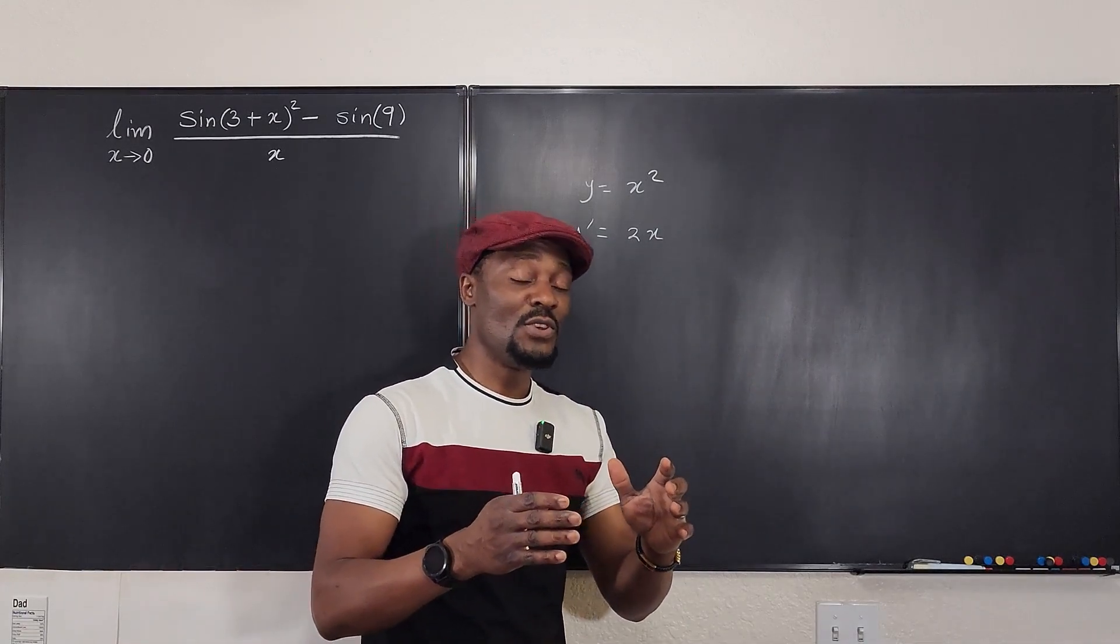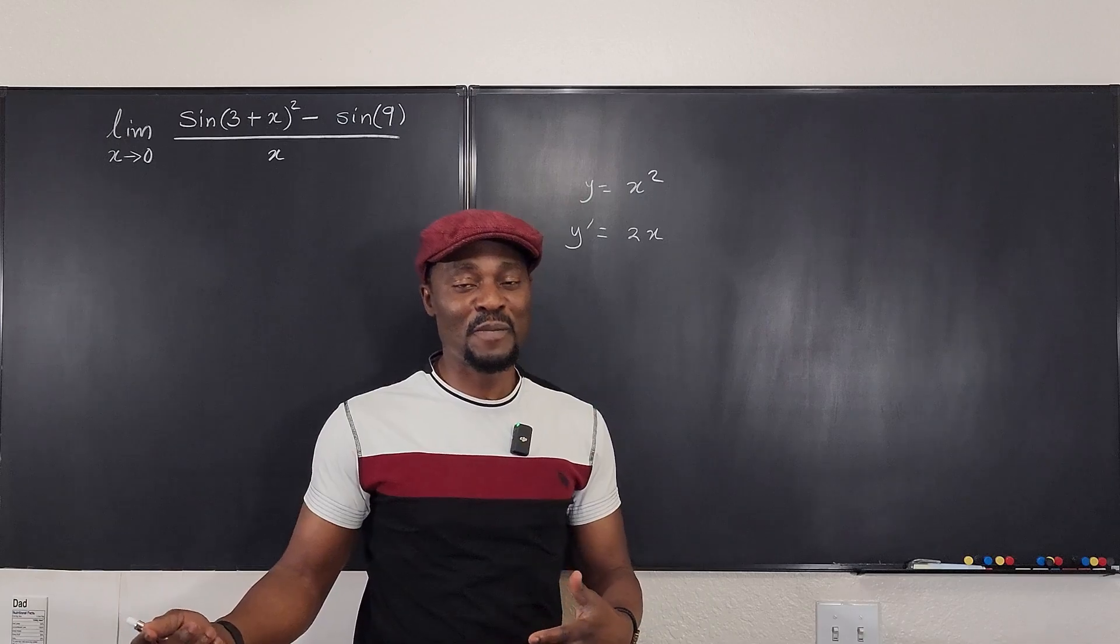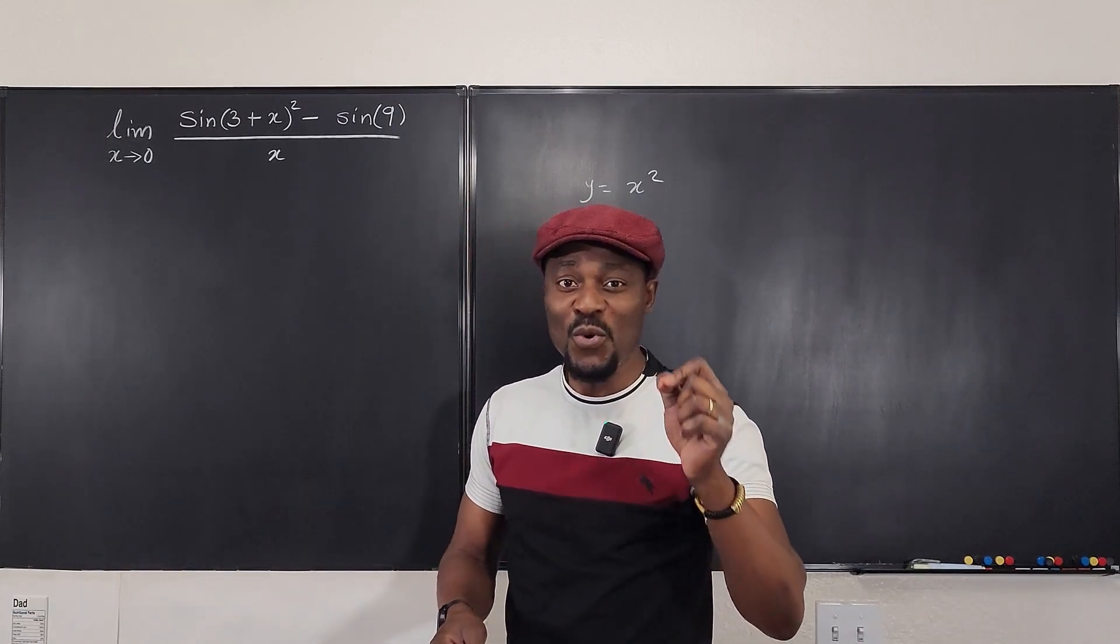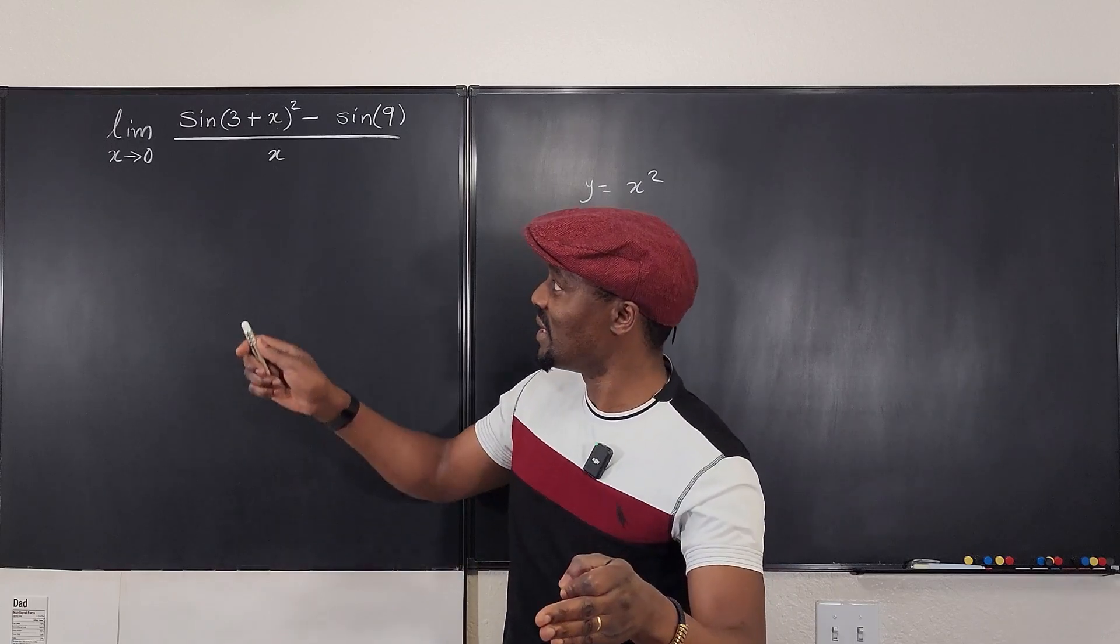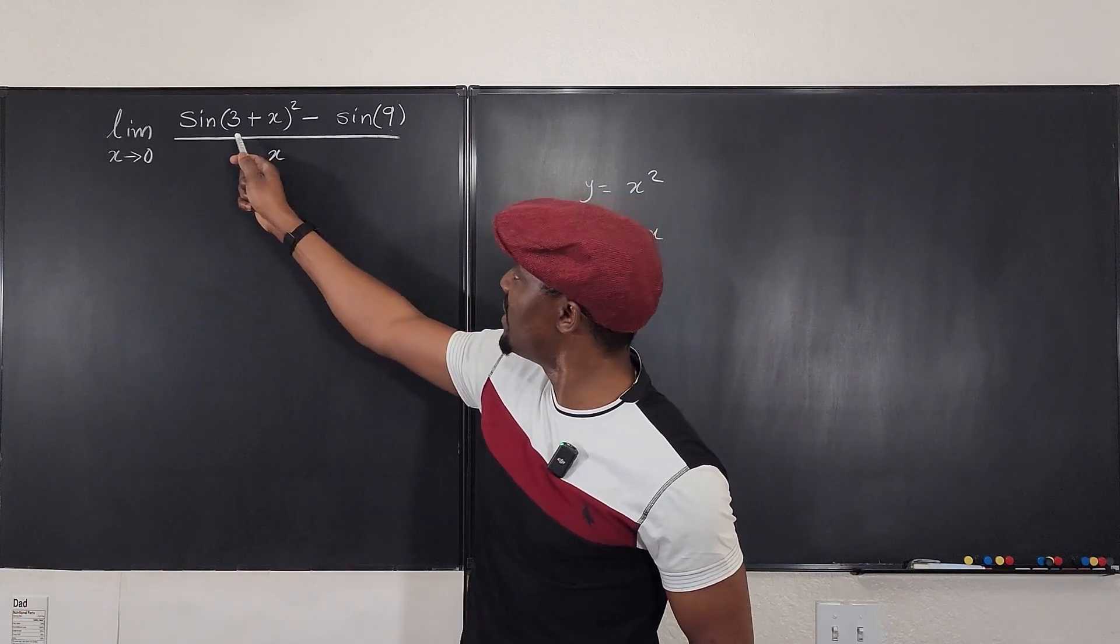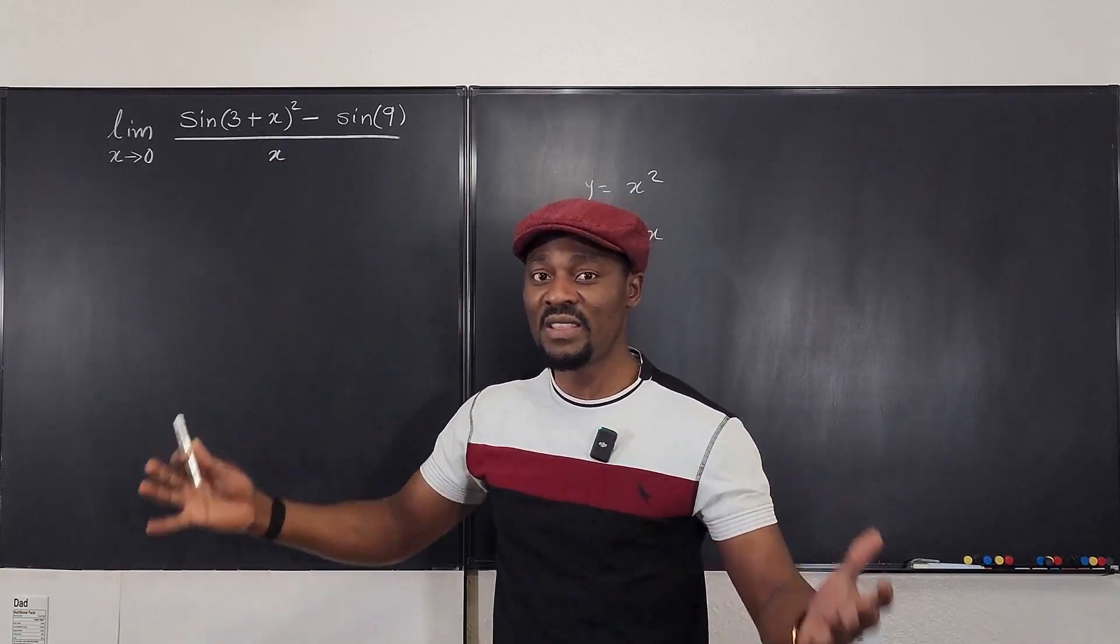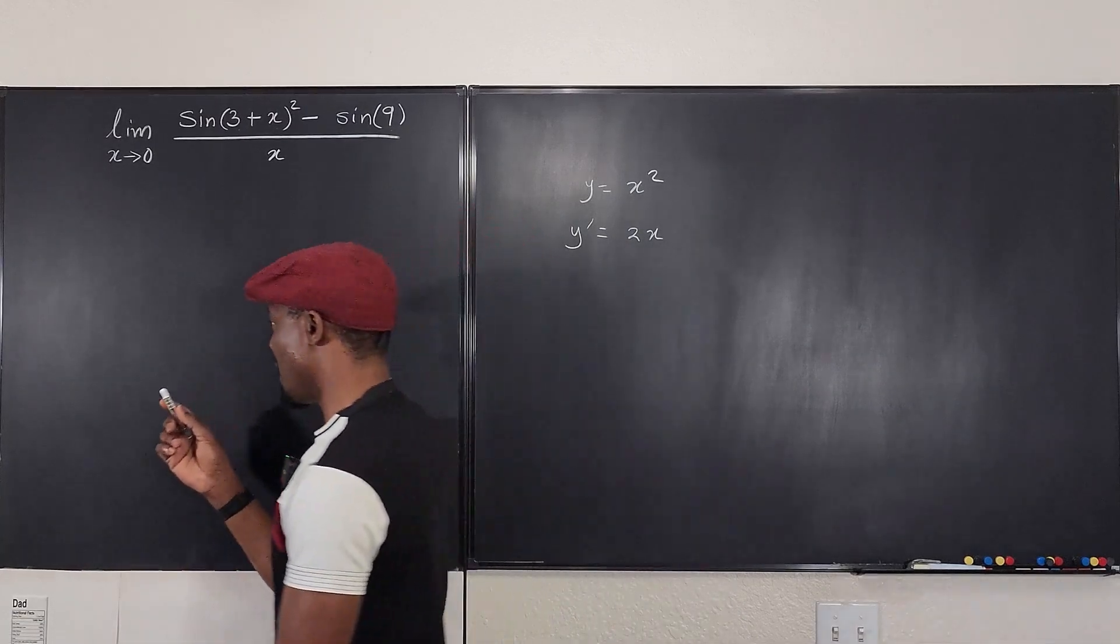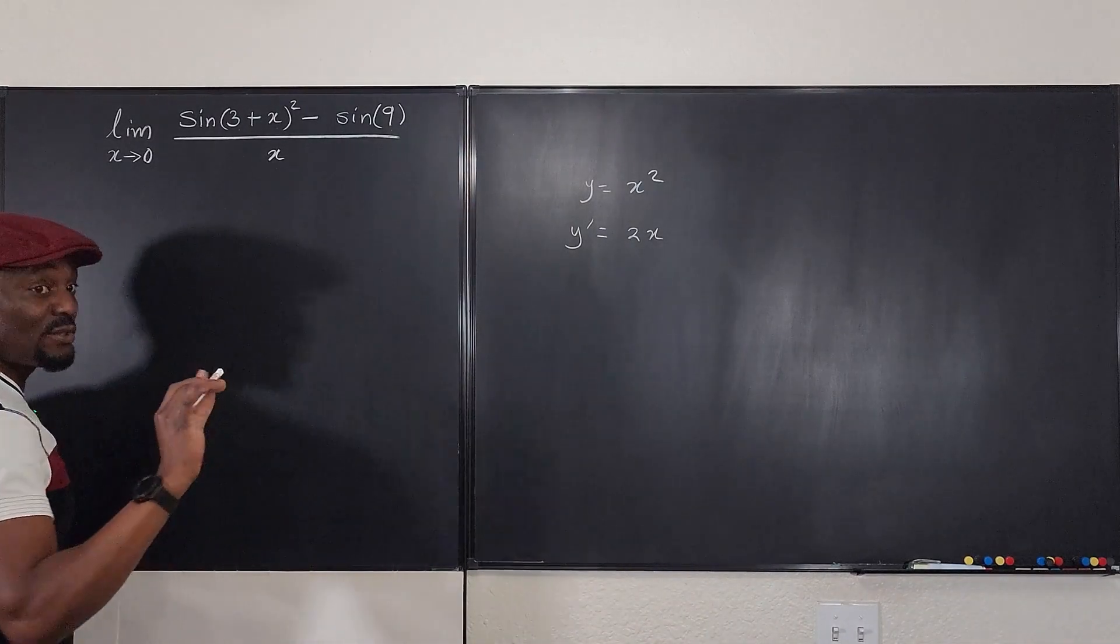Now, there's another formula you need to know, which I often don't use, which is when the point is specified, you have to use that formula because I can see that the point is specified. This has been substituted. There's a number here. Generally, you don't get these numbers when you're taking the derivative of a function. So look at this. We have two definitions.